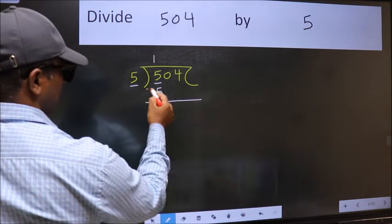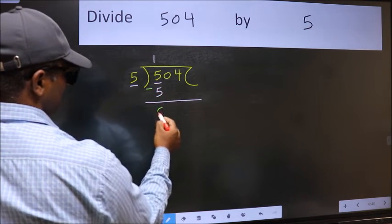Now we should subtract. 5 minus 5, 0. After this, bring down the beside number. So 0 down.